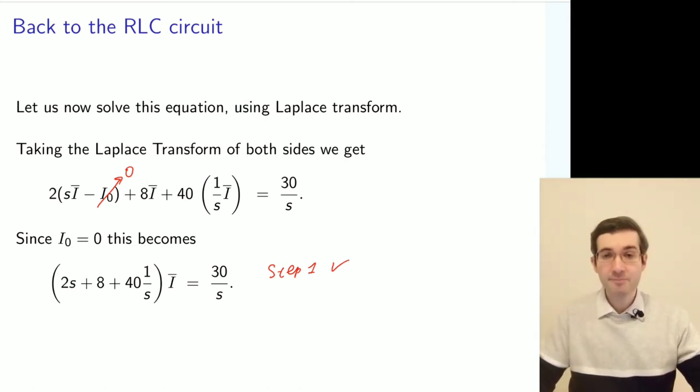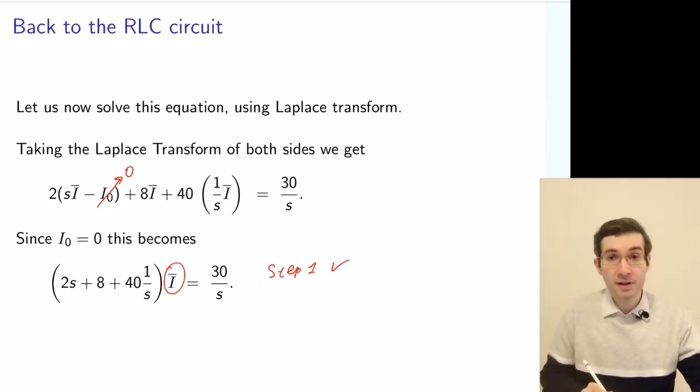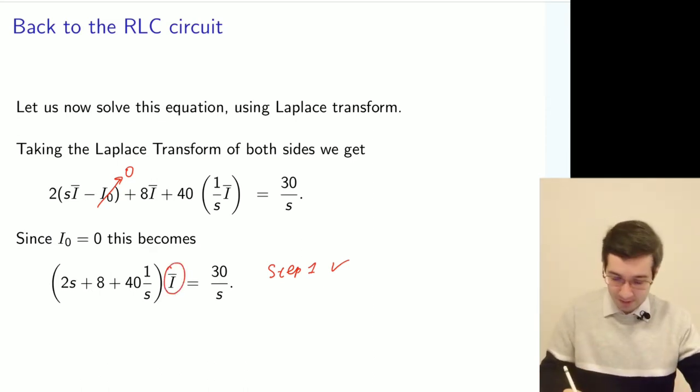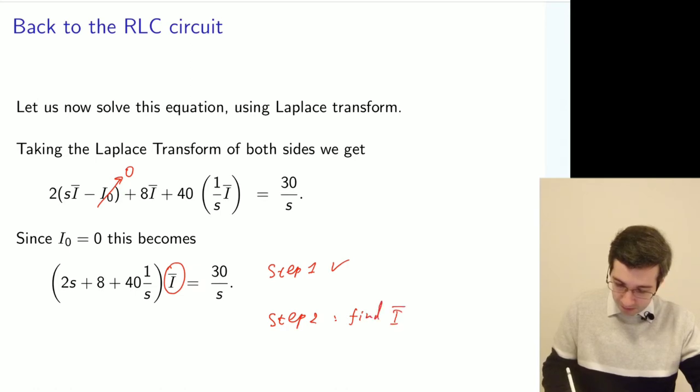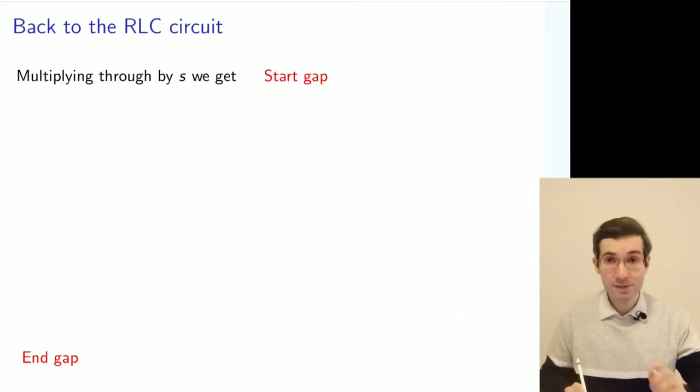Step 2 is we need to express an unknown function as a function of s in the s domain. So step 2 is find the i bar as a function of s. So we just need to do some manipulation. Let's do that. Please follow me.